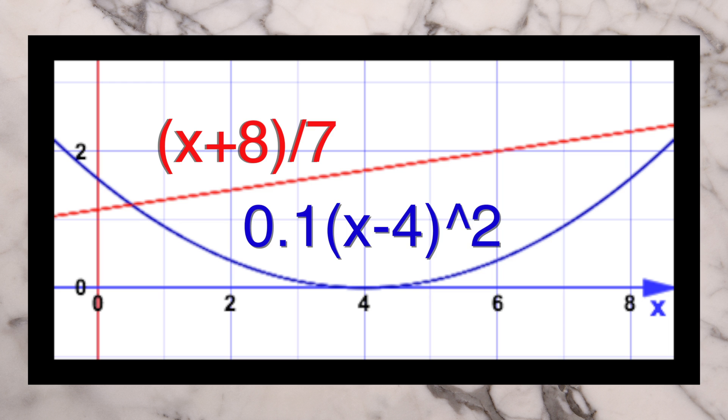We got two equations: x plus 8 over 7, and 0.1x minus 4 squared. That will make things a lot easier for us doing this.